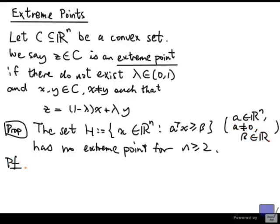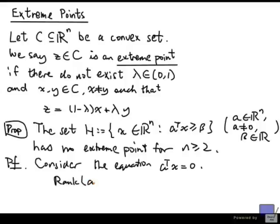So let's prove this. The proof is not too difficult. Consider the equation A transpose x equal to 0. Since n is at least 2, that means there are at least 2 variables in this equation. Well, the rank of this system is at most 1.